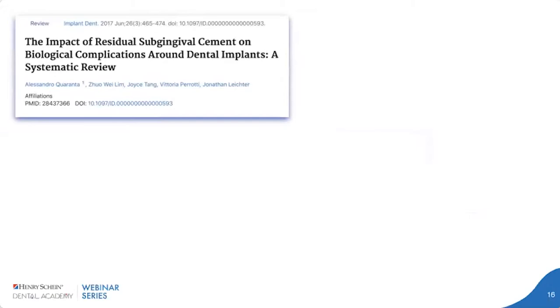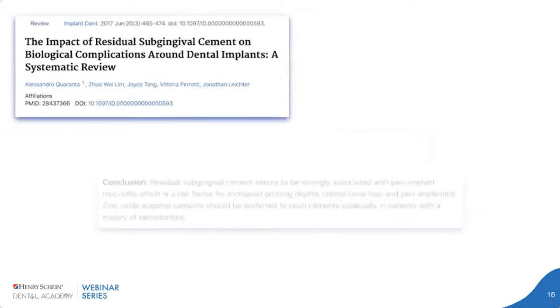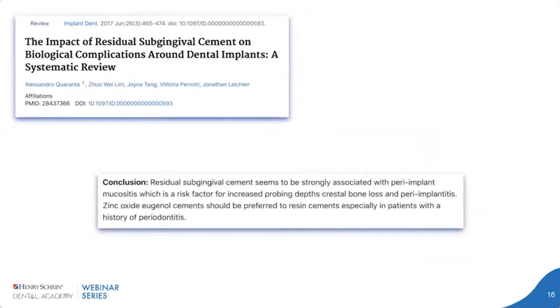A systematic review on the impact of residual subgingival cement on biological complications around dental implants concluded that residual subgingival cement seems to be strongly associated with peri-implant mucositis, which is a risk factor for increased probing depths, crestal bone loss, and peri-implantitis.